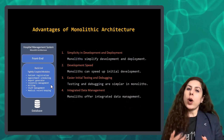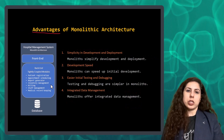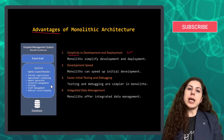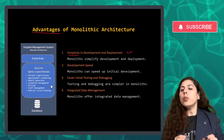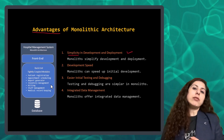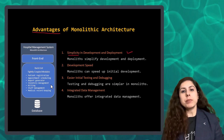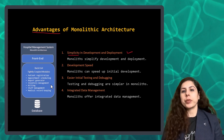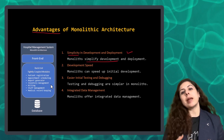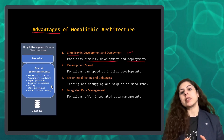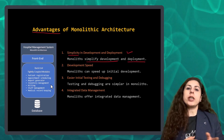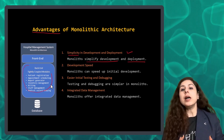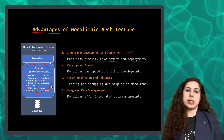Now let's look at some of the advantages of monolithic architecture. First, simplicity in development and deployment. Monolithic eliminates the need for complex network setups, cross-process communications, and distributed debugging. This simplicity can make development and maintenance more straightforward. For developers, understanding and working within a single code base can be simpler than dealing with multiple services.